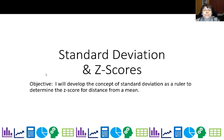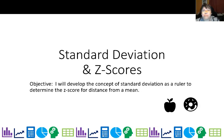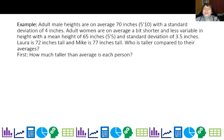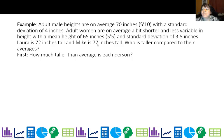In a way it's the first time you'll be able to compare apples and oranges, but I couldn't find an icon for an orange so I put a donut. Anyways, let's go ahead and look at adult male heights, which are on average 70 inches with a standard deviation of 4. Adult women are on average a little bit shorter at 65 inches with a standard deviation of 3.5 inches. Laura is 72 inches tall and Mike is 77 inches tall. Who is taller compared to their averages?